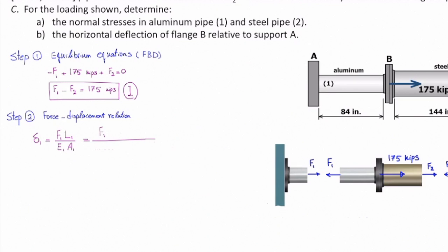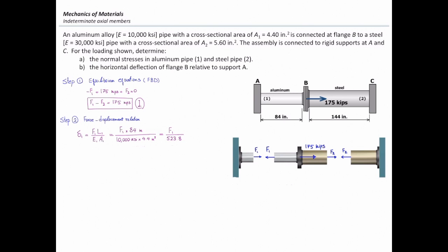F1 times length of the first element, which is 84 inches. Modulus of elasticity of the first element is 10,000 ksi, and area is 4.4. I plug the values that gives me F1 divided by 523.8.